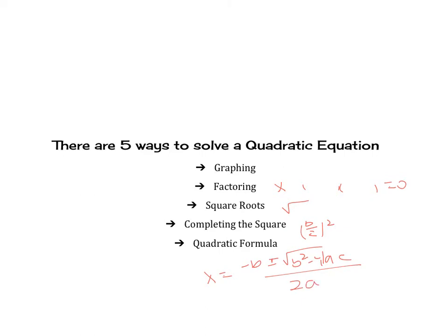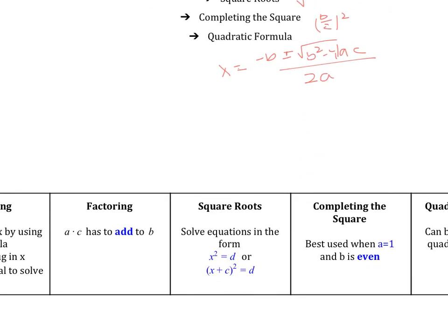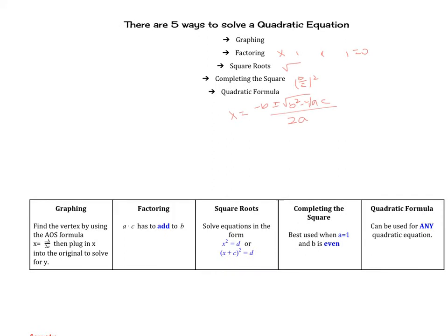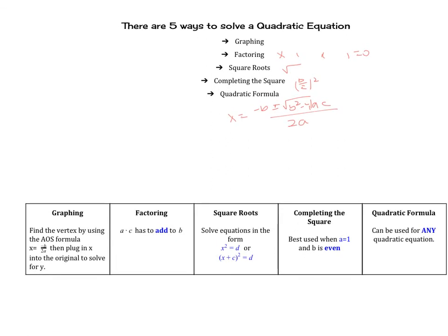Let's look at more specifics. For graphing, you find the vertex using the axis of symmetry formula x equals negative b over 2a, then plug that x into the original equation to solve for y. For factoring, a times c must add to b — so in ax² + bx + c, a times c adds to b. You use the magic x method, factor, set equal to zero, and apply the zero product property.